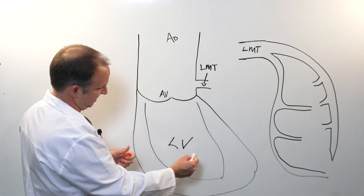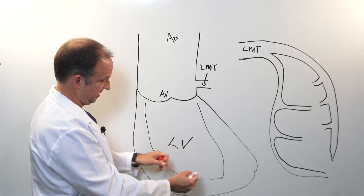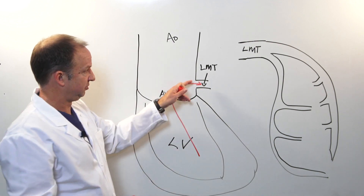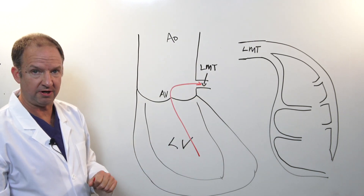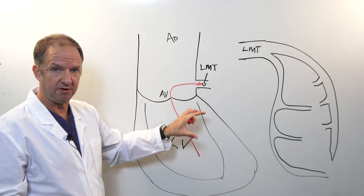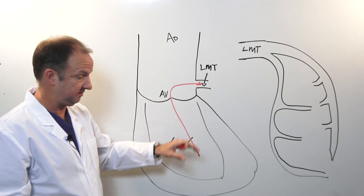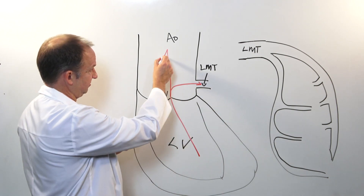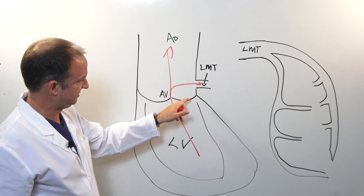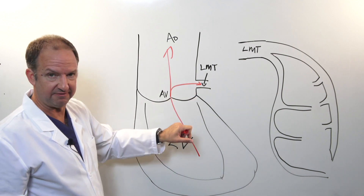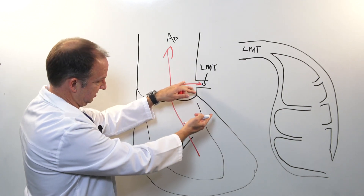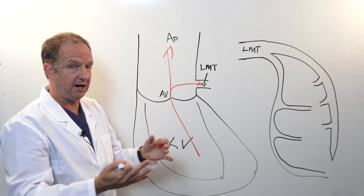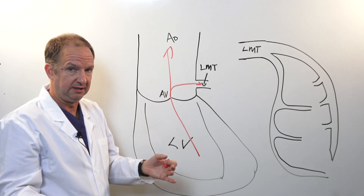When blood is ejected from the left ventricle, it gets pushed down the left main coronary artery, which is responsible for providing blood to the heart. Blood also goes this way, keep in mind. Now let's magnify this particular image so that you can understand what the coronary artery tree looks like.